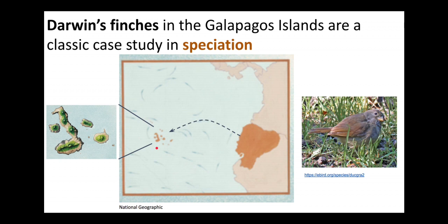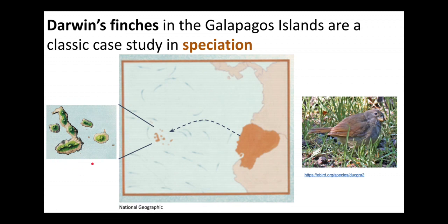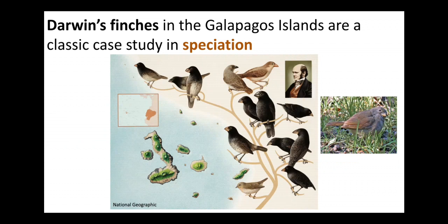Sometimes in the past, a small number of individuals from a population of this finch somehow made it to the Galapagos Islands — perhaps they were blown over there by a strong storm. When they set up populations on the islands, they evolved and adapted to the environment of the Galapagos. Moreover, they began to diversify and develop into separate populations and separate species, so that the single finch species from mainland South America evolved into numerous species and even several genera of finches on the Galapagos Islands.